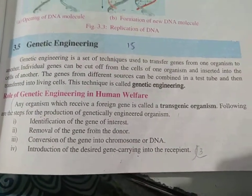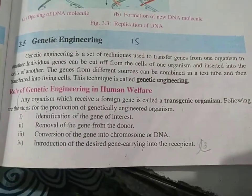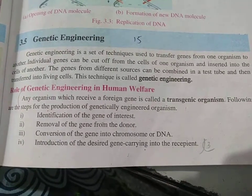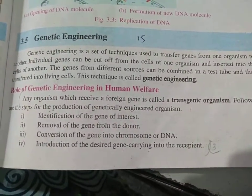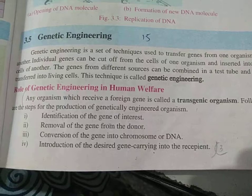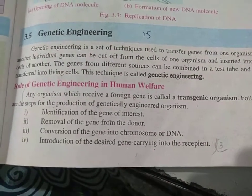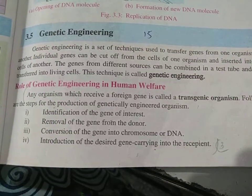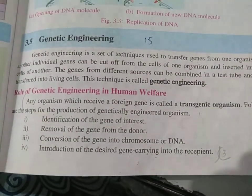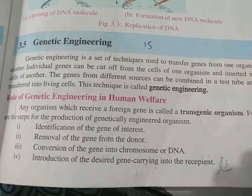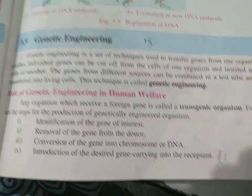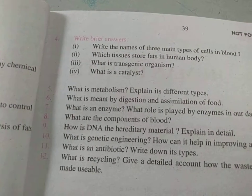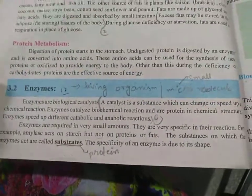What is a transgenic organism? Come to the page — any organism which receives a foreign gene is called a transgenic organism. The steps for production of a genetically engineered organism are: identification of the gene of interest, removal of the gene from the donor, conversion of the gene into a chromosome or DNA, and introduction of the desired gene into the recipient.